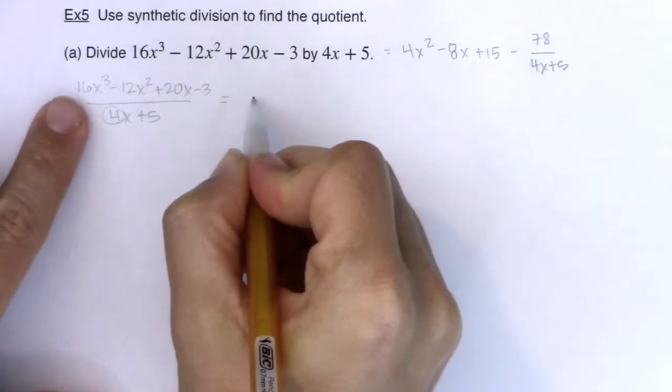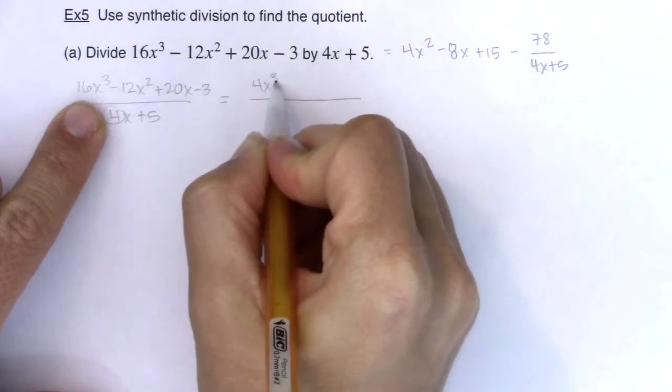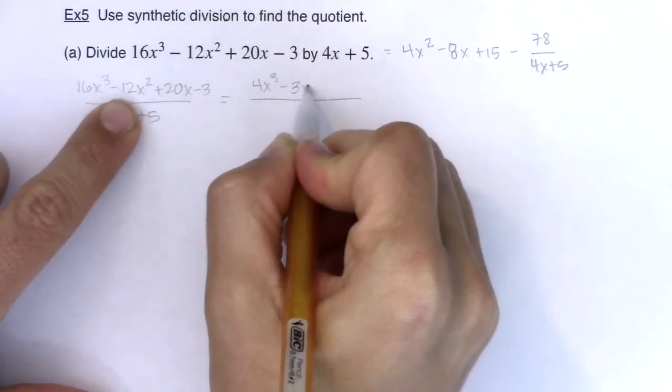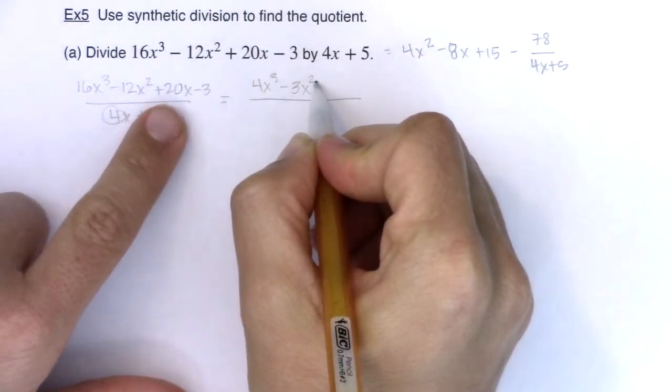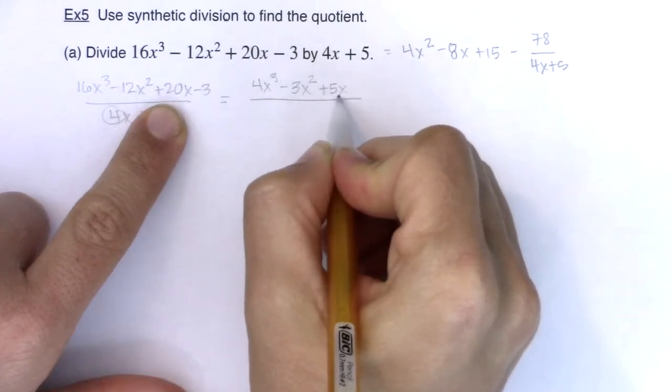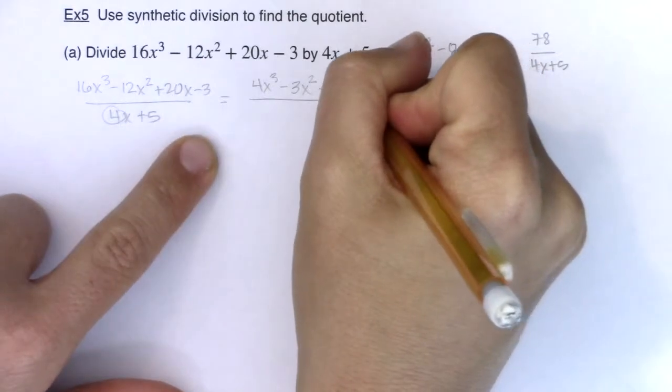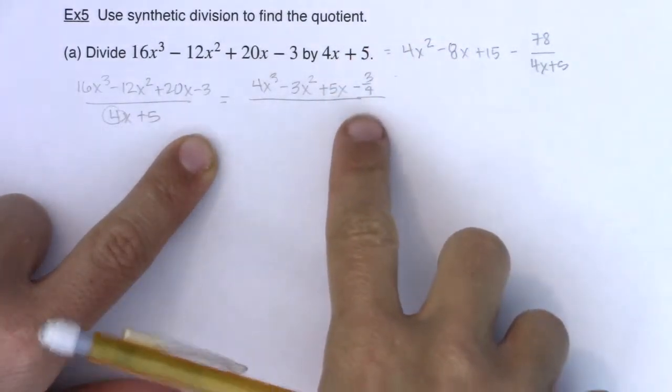So when I divide everything by 4, if I divide 16x cubed by 4, I'm going to get 4x cubed. If I divide 12x squared by 4, I'm going to get minus 3x squared. If I divide 20x by 4, I'm going to get 5x, right? And if I divide negative 3 by 4, I'm going to get negative 3 fourths. All right, so you see that there's fractions getting introduced.